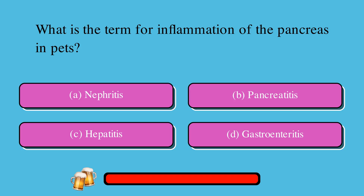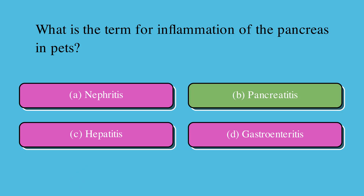What is the term for inflammation of the pancreas in pets? A. Nephritis, B. Pancreatitis, C. Hepatitis, or D. Gastroenteritis. The correct answer is B. Pancreatitis.